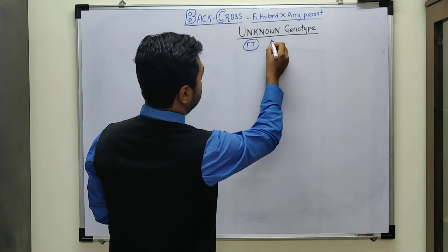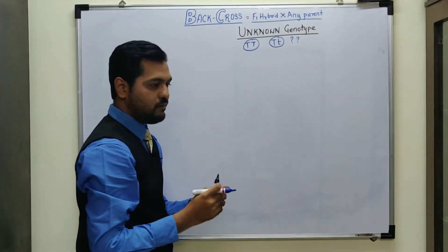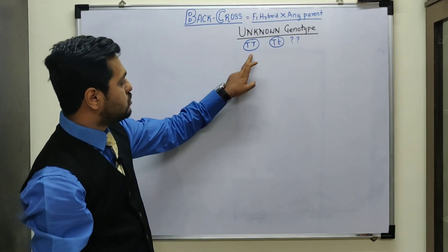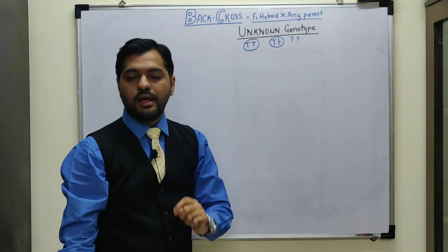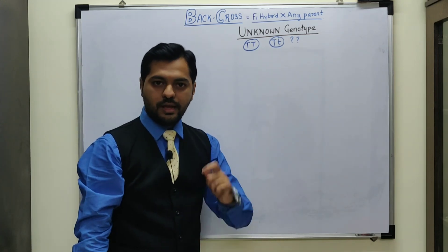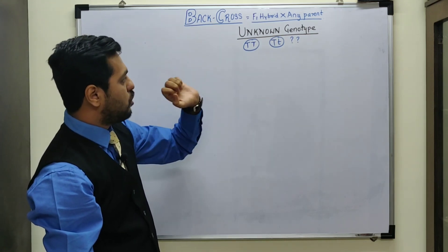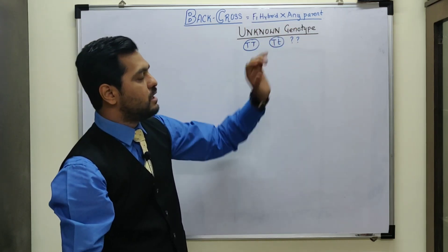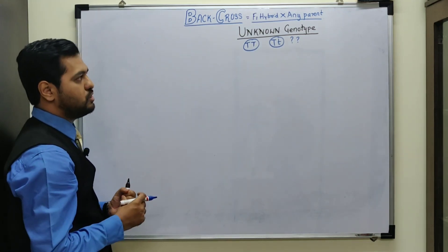If we are not aware whether a particular organism is homozygous dominant or heterozygous dominant, if we are not sure that it is homozygous tall or heterozygous tall, we know that it is phenotypically tall. But if we don't know the genotype, then to identify the unknown genotype, we can perform a back cross of the F1 hybrid with any of the parent. So let us first discuss that in the back cross we have made a strategy.